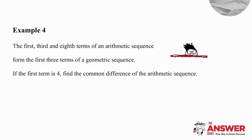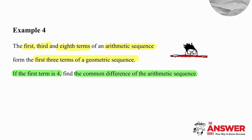In the last question of this video, we use the fact that the first, third and eighth terms of an arithmetic sequence form the first three terms of a geometric sequence. Given that the first term of the arithmetic sequence is 4, we need to find the common difference. The third term will be 4 plus 2 differences, and the eighth term will be 4 plus 7 differences, and those three terms form the first three terms of a geometric sequence.